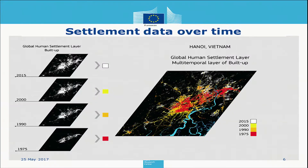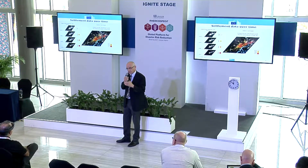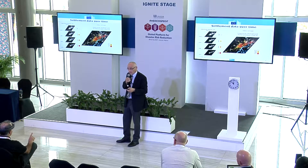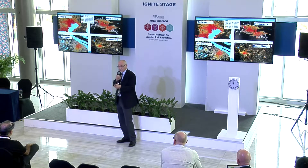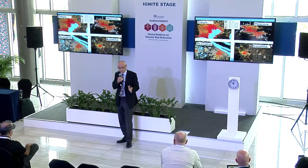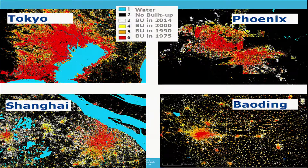These are four layers: 1975, 1990, 2000, and 2015. You can color these four layers in red, orange, yellow, and white, and you have a multi-temporal map where the red is the amount of built-up in 1975, and then you can see how the city has expanded. This is shown for Hanoi, but you can have this for any city in the world.